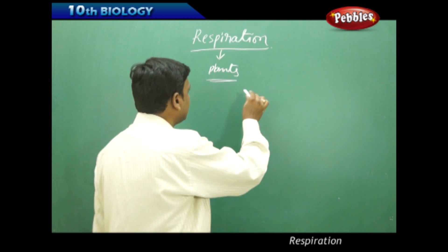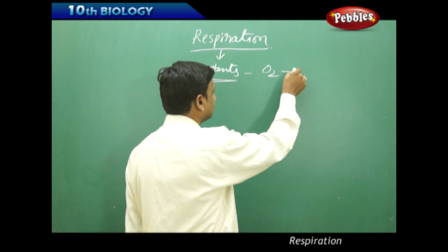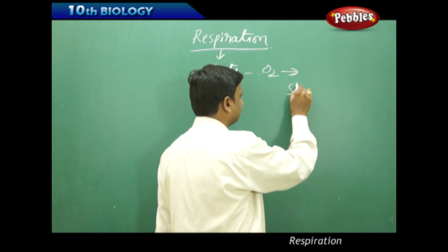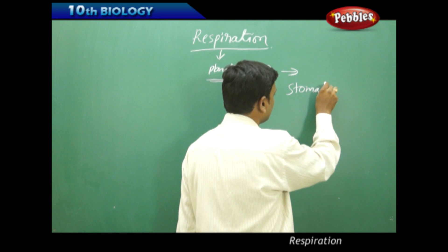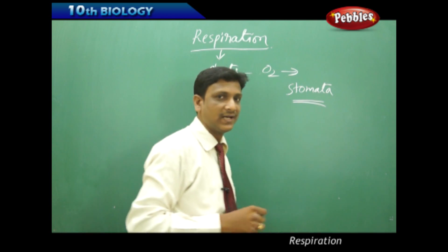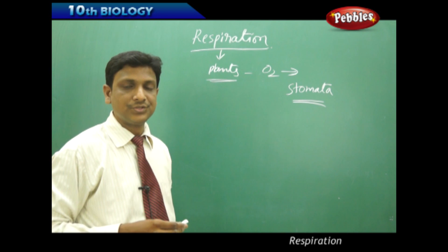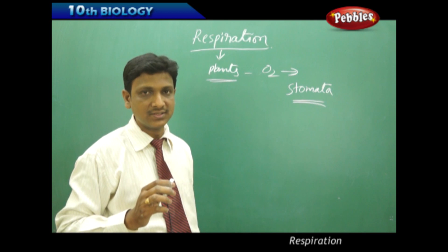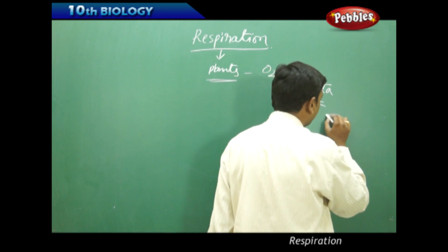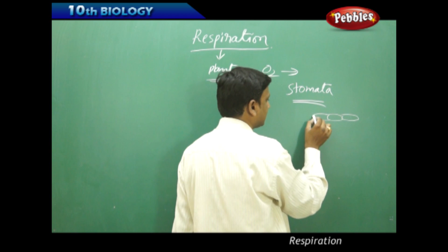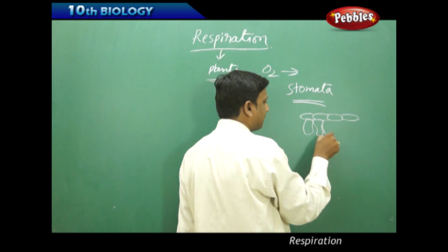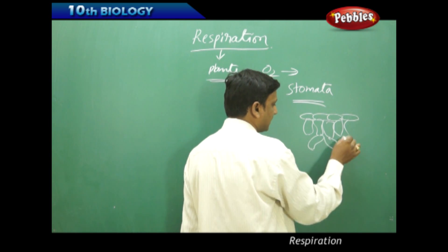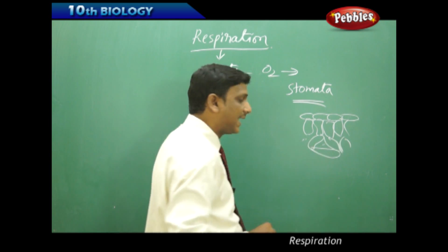Plants mainly get oxygen that is absorbed from the atmosphere through the stomata. Stomata are present on the surface of the leaf, so the leaf acts as a respiratory organ. It has pores through which oxygen enters. Inside the leaf, if you observe the cells, they are loosely packed and between some cells you will find air spaces.